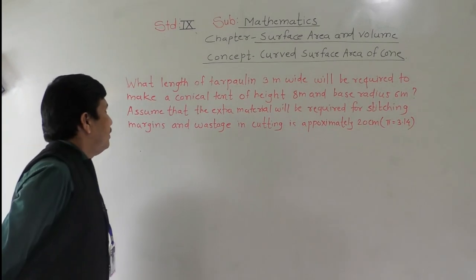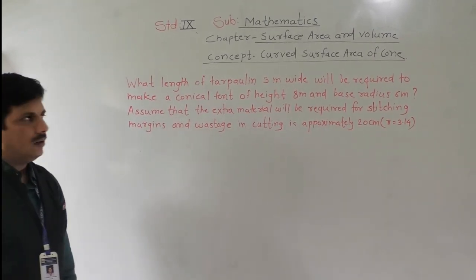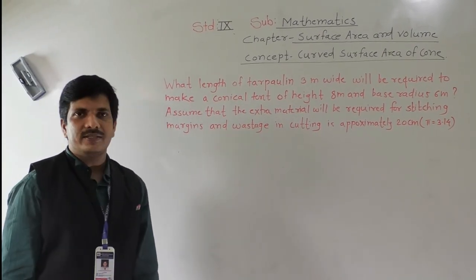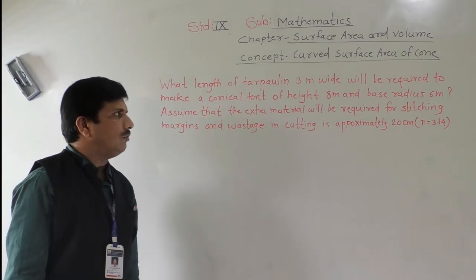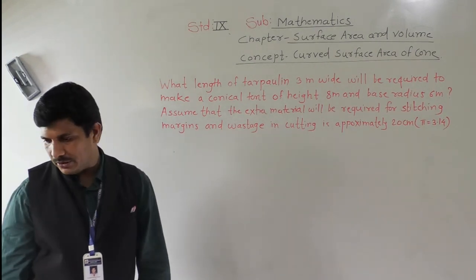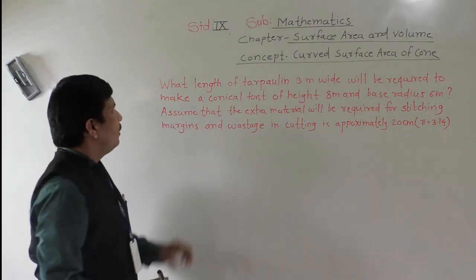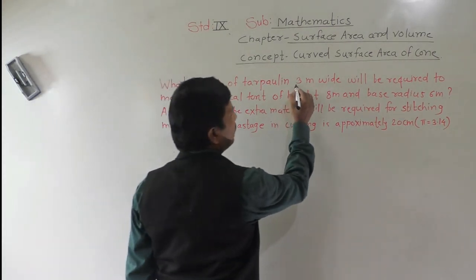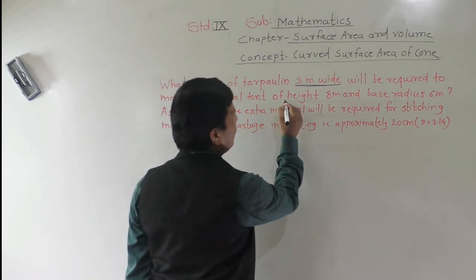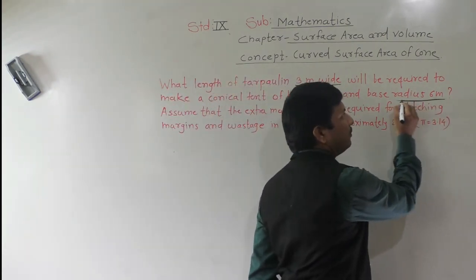Next problem: what length of tarpaulin 3 meters wide will be required to make a conical tent of height 8 meters and base radius 6 meters? Width is given as 3 meters, height h = 8 meters (vertical height), and radius r = 6 meters.